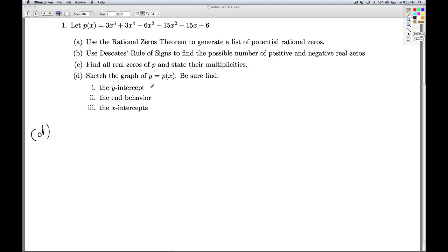Okay, part d. We're asked to sketch the graph of y equals p of x and be sure to include all of these things. For the y-intercept, as always, I set x equal to 0. The y then is the function at 0. I go back up to my formula, and here's my function for p of x. If I plug in 0, all these x terms wipe out and I just get negative 6. So the y-intercept is 0, negative 6.